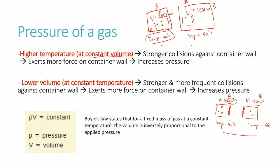Taking these two concepts together: higher temperature at constant volume increases pressure, and lower volume at constant temperature also increases pressure. This is described by Boyle's Law, which states that for a fixed mass of gas at a constant temperature, the volume is inversely proportional to the applied pressure. In other words, at the same temperature, increased volume gives lower pressure, and decreased volume gives higher pressure. The exact relationship depends on the constant for that particular gas, but all gases demonstrate this pattern.